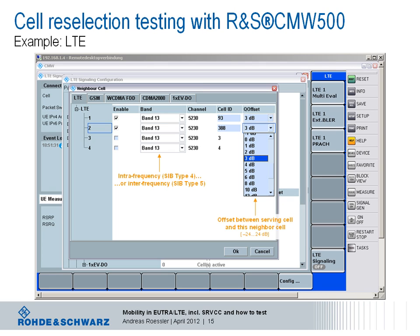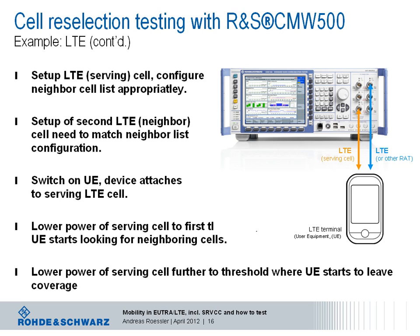By selecting another frequency band, for instance the AWS band 4, you can configure neighbor cells to be on a different frequency band, performing inter-frequency measurements. The CMW's emulated cell would then broadcast this information as part of the system information. The actual procedure is a step-by-step approach: first, set up a dual-channel CMW500, set up the LTE serving cell, and configure the neighbor cell list appropriately.